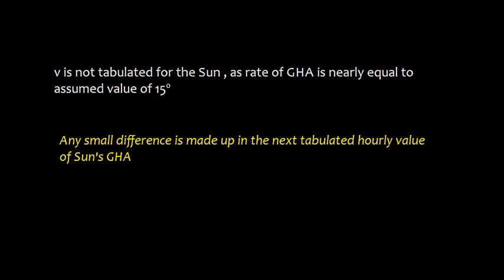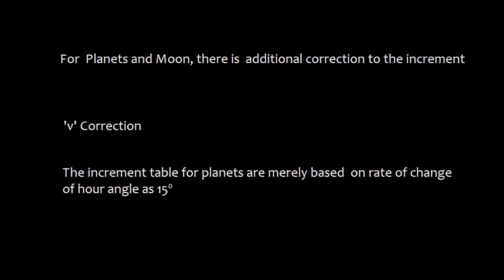V is not tabulated for sun as the rate of GHA is nearly equal to assumed value of 15 degrees. Any small difference is made up in the next tabulated hourly value of sun's Greenwich hour angle.